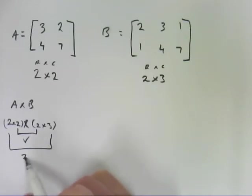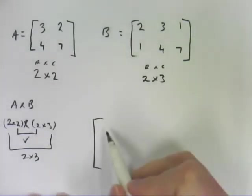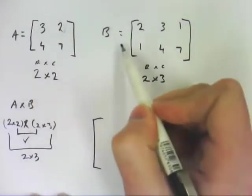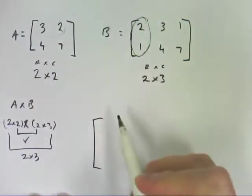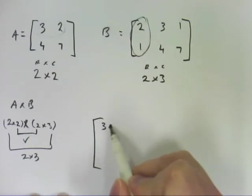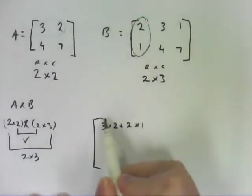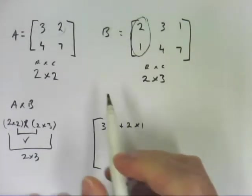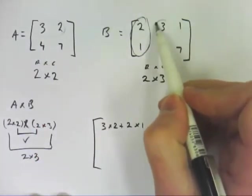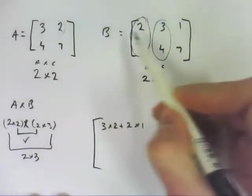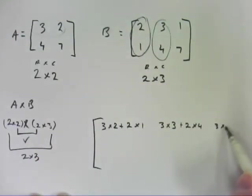And my resulting matrix is going to be a 2 by 3 matrix. But to work that out, what you do is you go this row by this column, 3 by 2 plus 2 by 1 gives you the top value here. If we work to this column now, 3 by 3 plus 2 by 4, and the last column will be 3 by 1 plus 2 by 7.